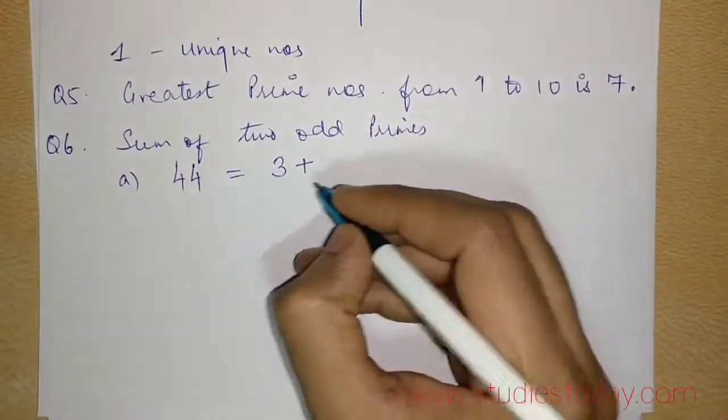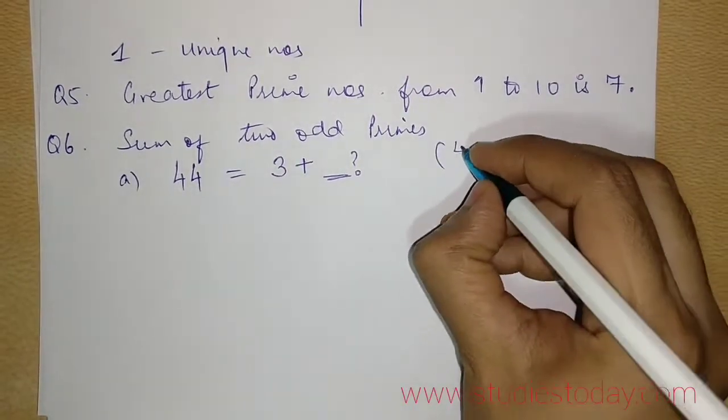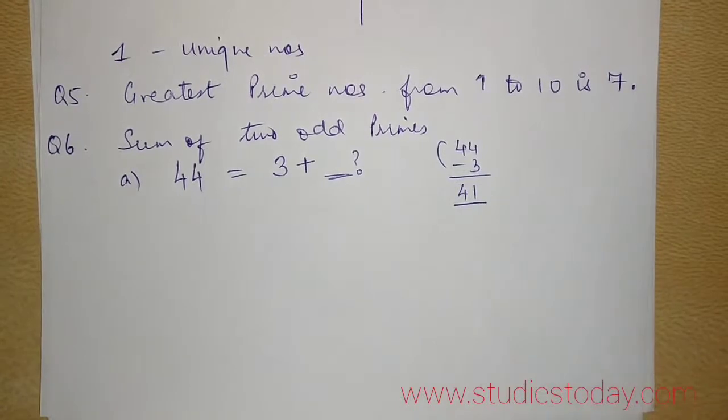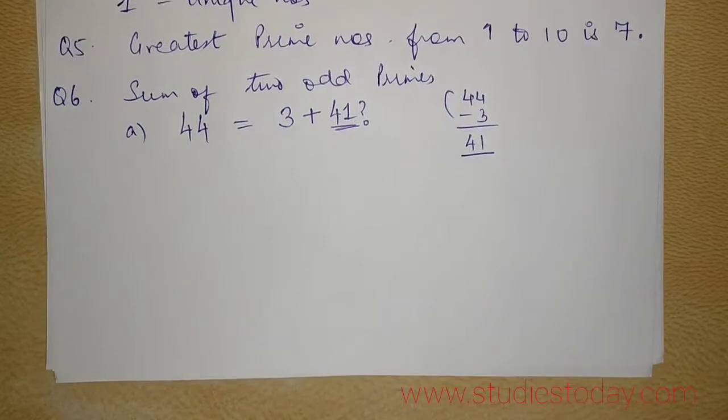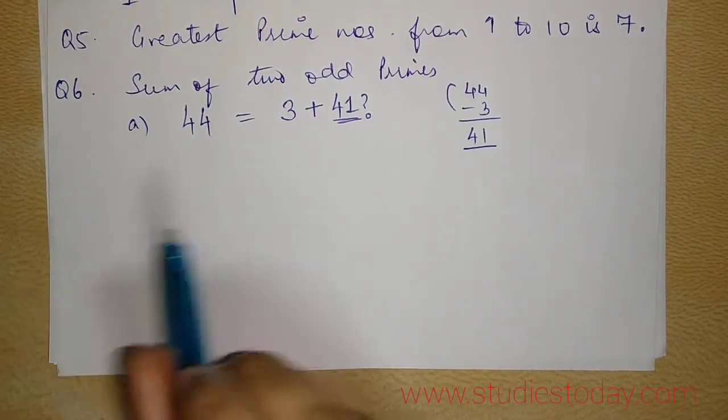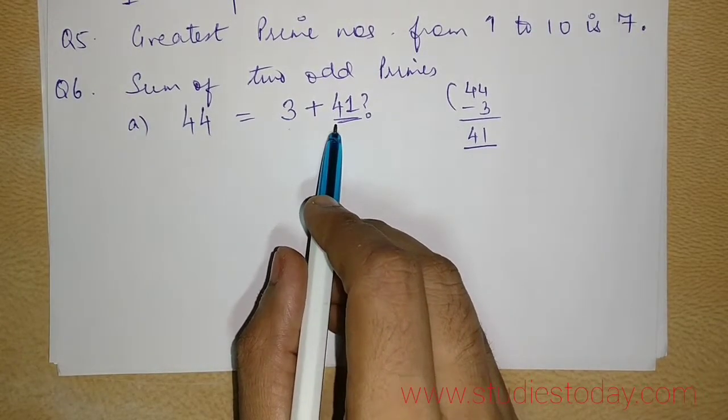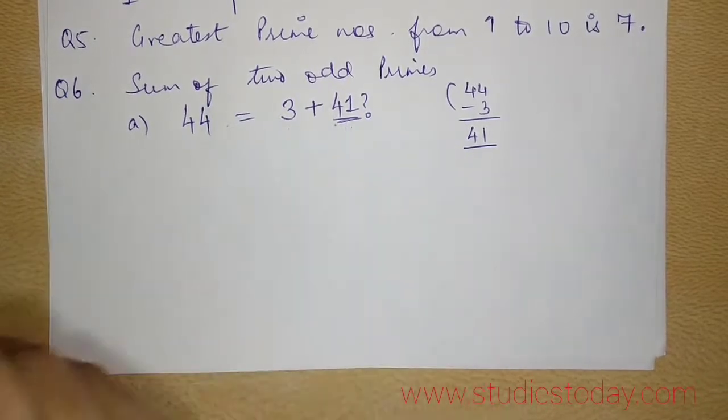Now 3 plus what is 44? You all know how to calculate 44 minus 3, which comes out to be 41. That means I should fill this question mark by 41. Now, my work is to see that whether 3 and 41 both are prime or not. Because certainly they both are odd.